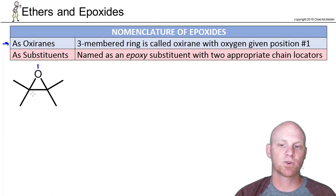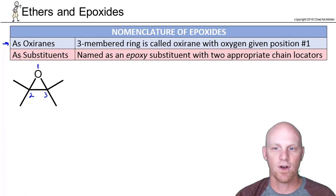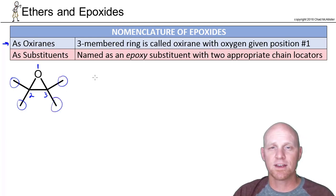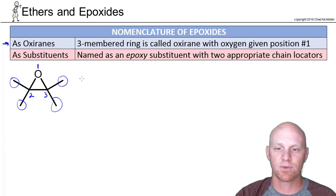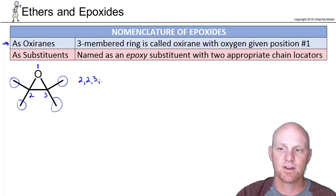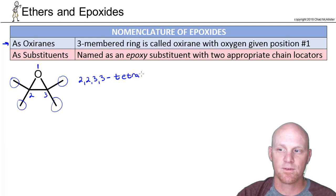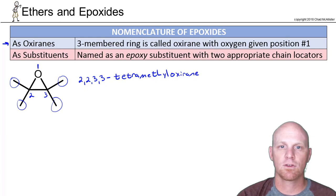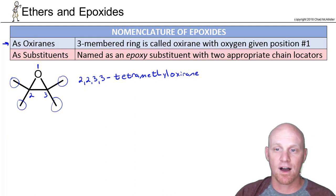In this case the molecule is symmetrical, so it really doesn't matter — two and three are both equivalent, and I could have numbered it either way. We've got methyl groups: two of them on carbon two and two of them on carbon three. So we have to give chain locators for all four methyl groups: 2,2,3,3-tetramethyl. Then we just say oxirane as the parent. So that's naming epoxides as oxiranes.